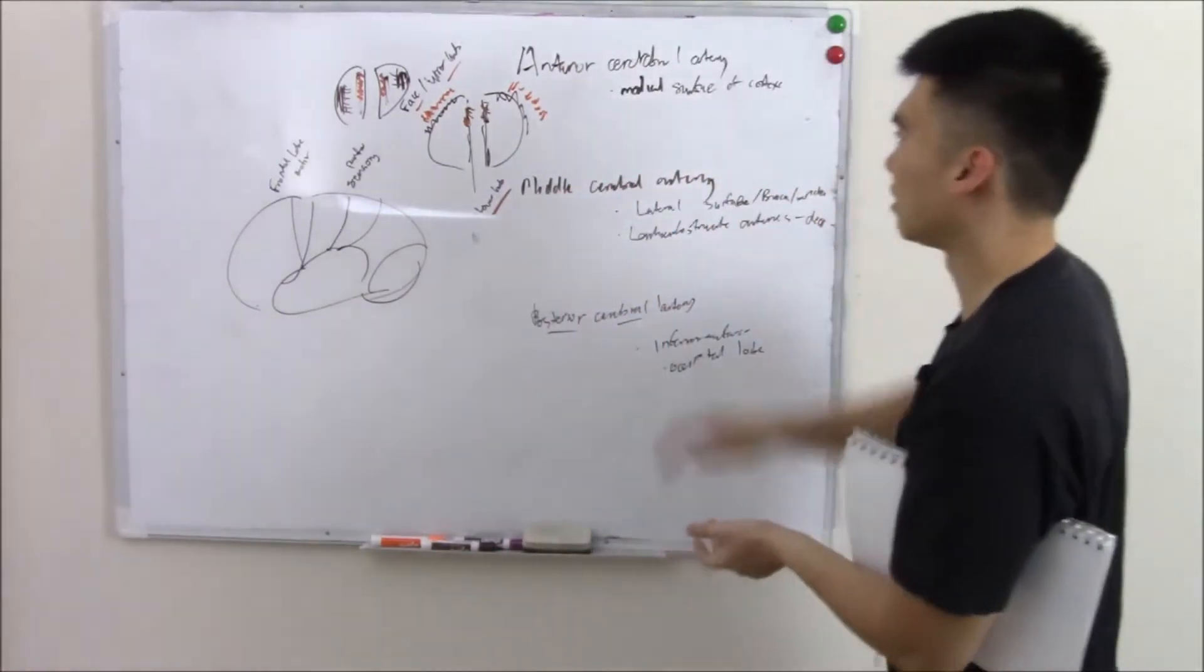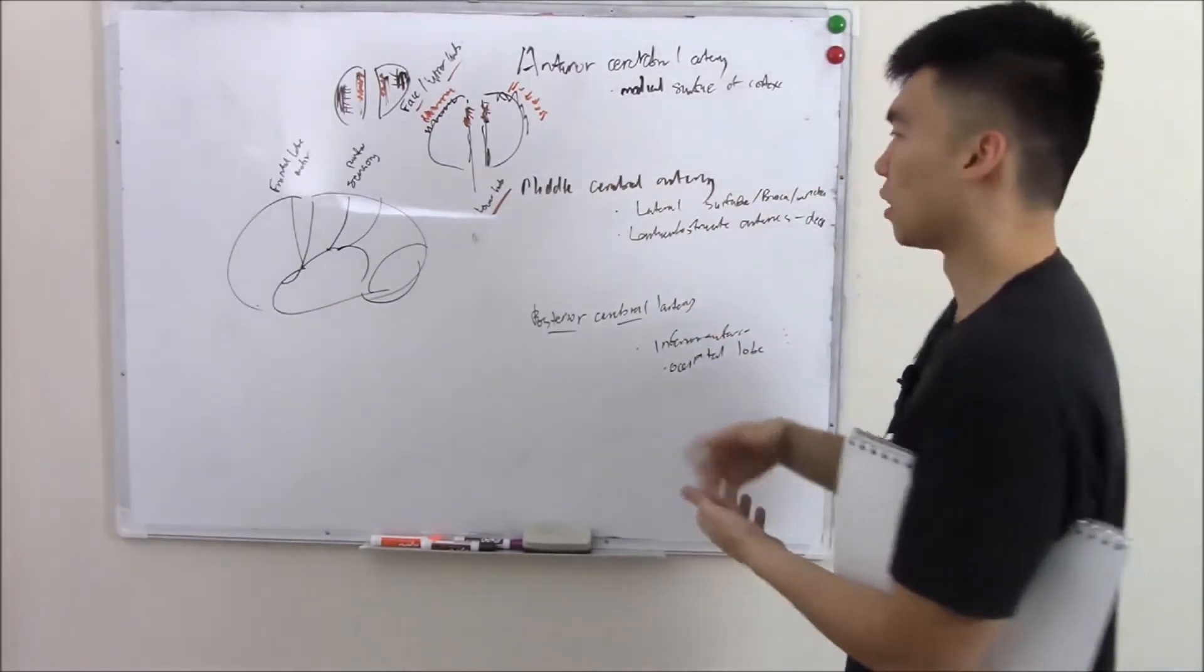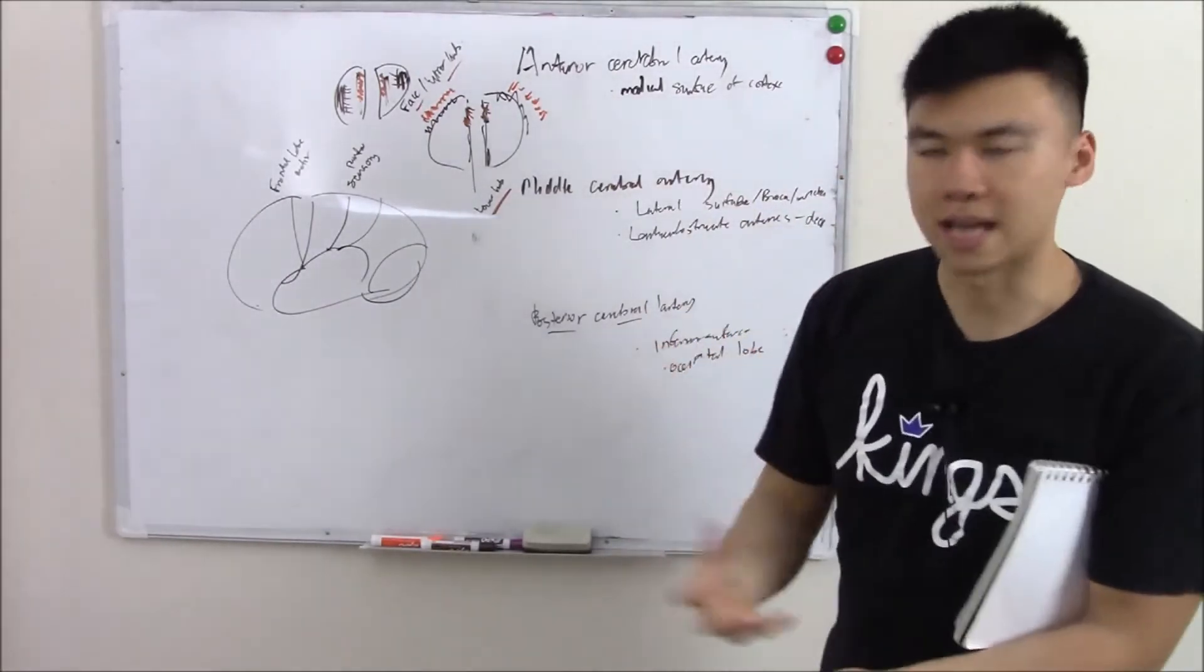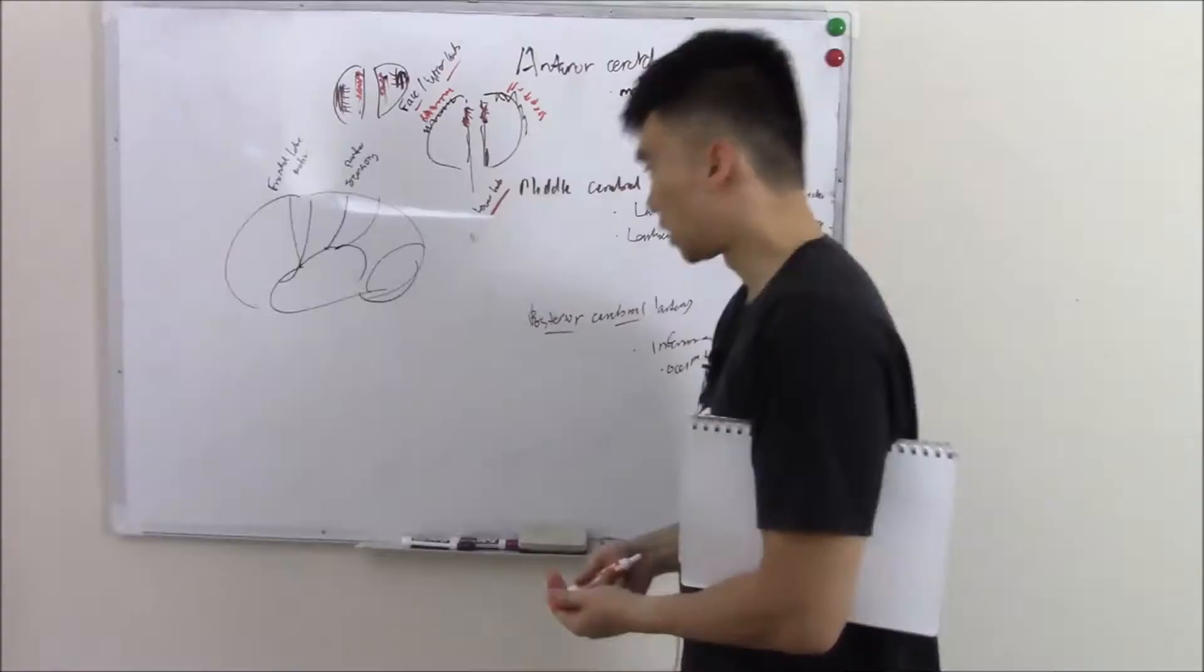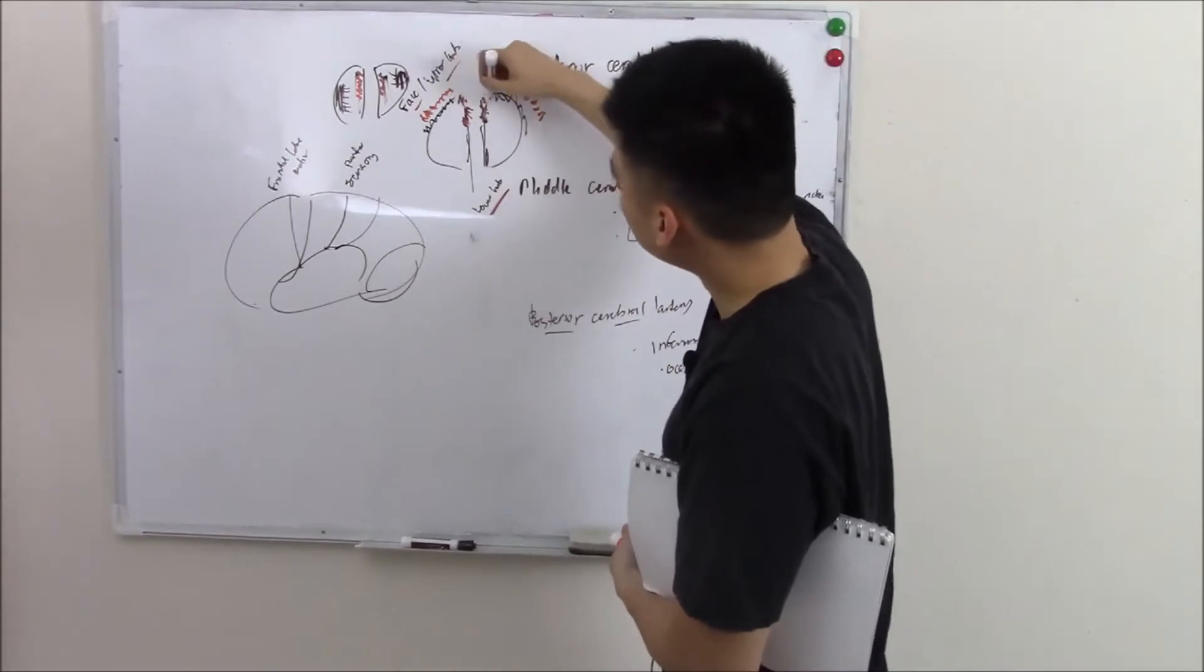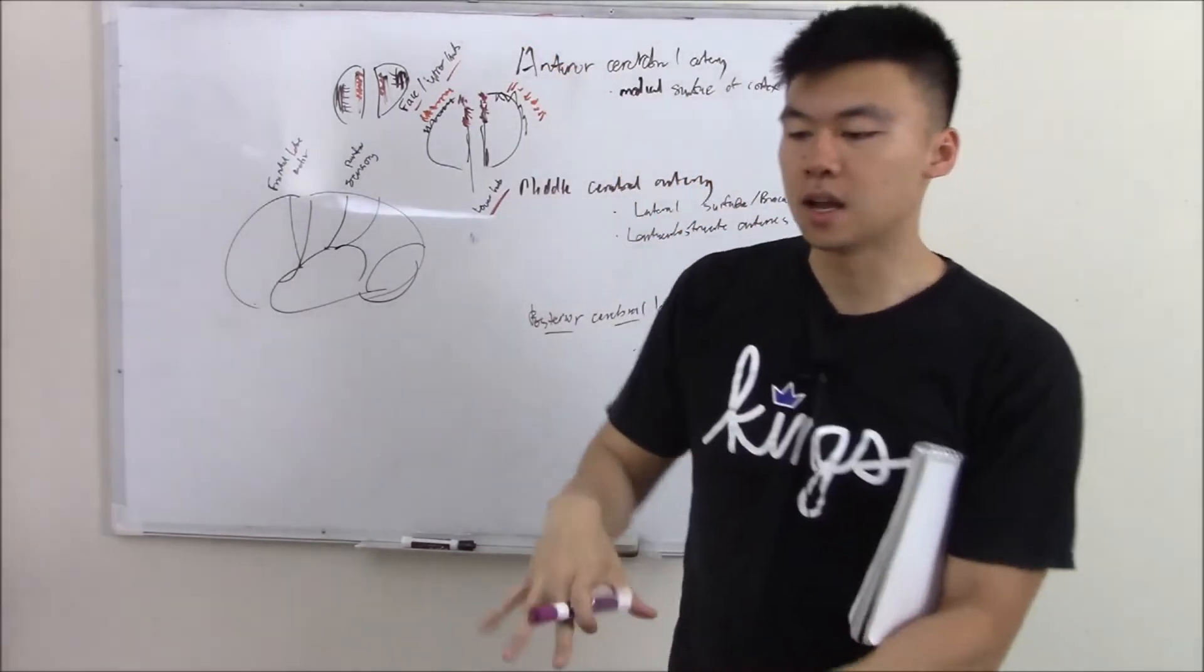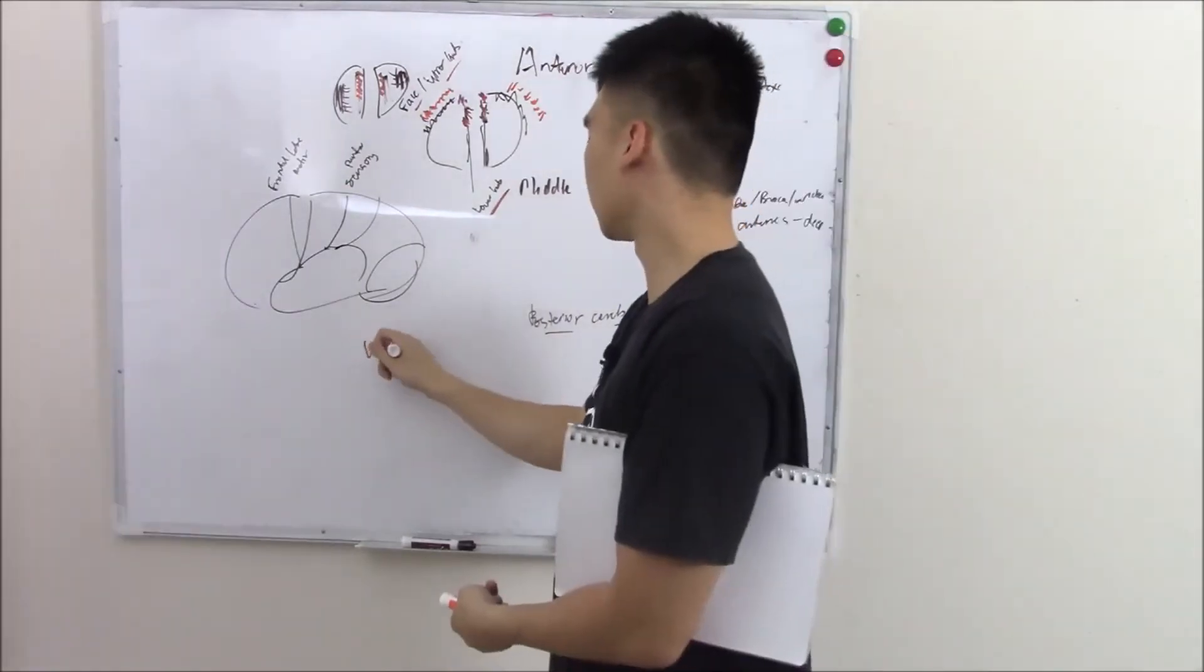So it's very important you understand what they supply and what can go wrong if they're blocked or if there's a leak or if there's some sort of damage to these arteries. Last thing I want to talk about. There's an area in between the artery supplies and we call it the watershed zone. An area where it's not really supplied by anything. Watershed zone.